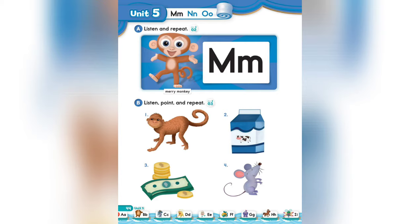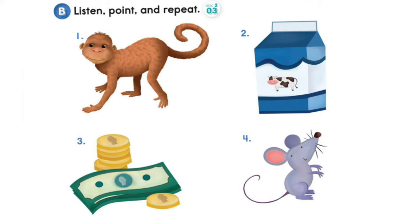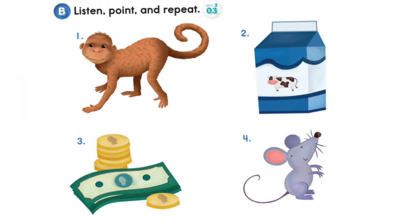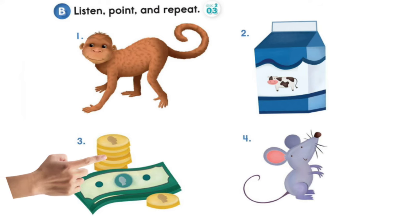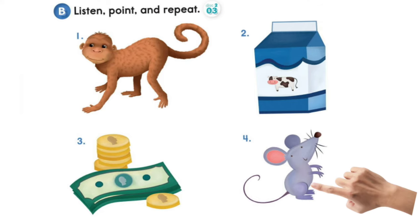Page 44, B: Listen, point, and repeat. 1 - Monkey, monkey. 2 - Milk, milk. 3 - Money, money. 4 - Mouse, mouse.